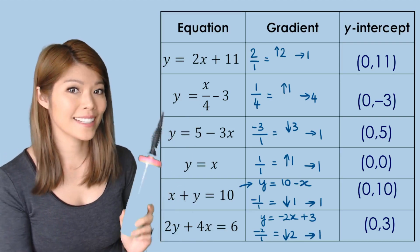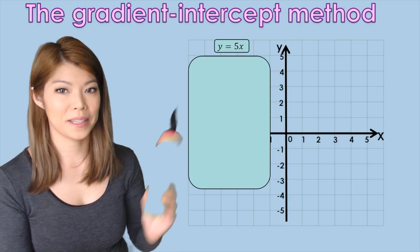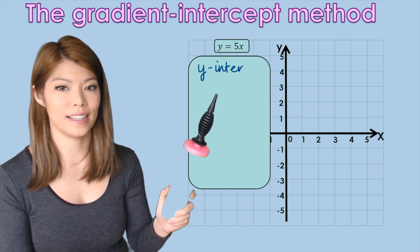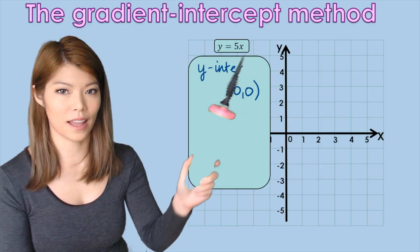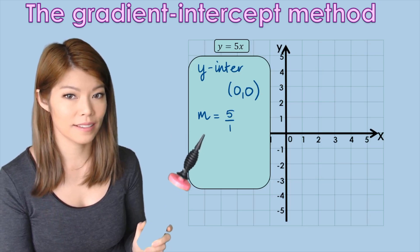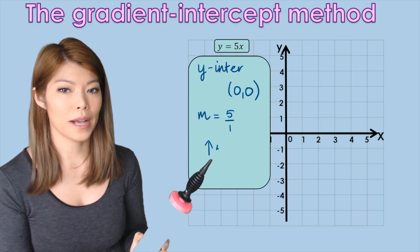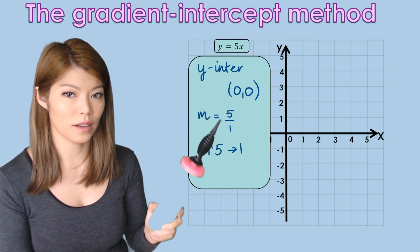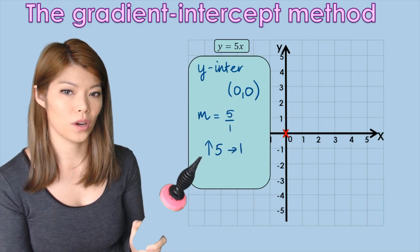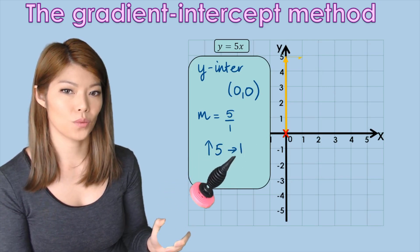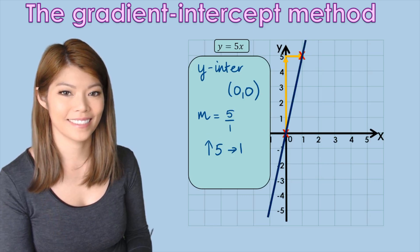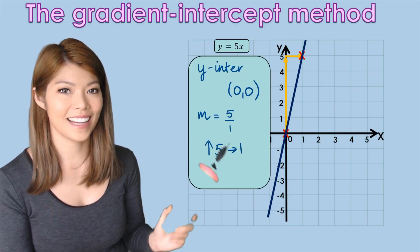Now let's try sketching using the gradient intercept method. For y equals 5x, the y-intercept is (0, 0) and the gradient is 5 over 1 — up 5, across 1. We start at (0, 0), go up 5 and across 1, land our next point, and draw the line. That's the gradient intercept method — we obtain a second coordinate by following the gradient directions.